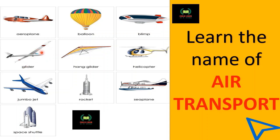Look at this glider — it is gliding in the air. If an aeroplane doesn't have a glider, it will not be transported in the air. Air transport is the most expensive mode of transport.